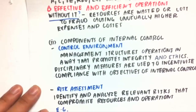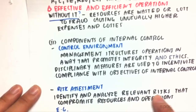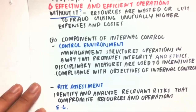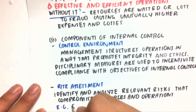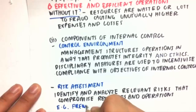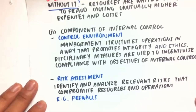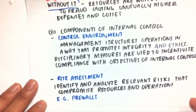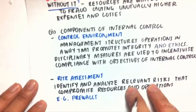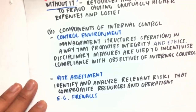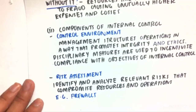Our next component is risk assessment. We identify and analyze relevant risks that compromise resources and operations. For example, if our firewalls are very vulnerable to attack and being manipulated by people from outside the organization, we need to identify that risk and have provisions to stop it — for example, having better passwords and security controls.